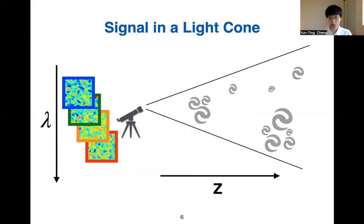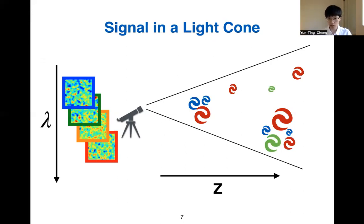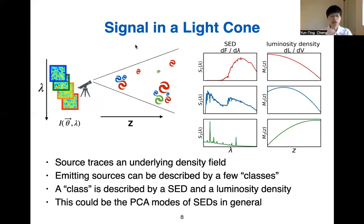Let's first think about how we can describe the signal we see in the data. Our observing data is an intensity map in multiple frequencies, and the signal is coming from all the sources within the light cone of our observation across all redshifts. We can describe these sources in terms of a few different classes — for example, red, blue, and green classes — where all these galaxies trace the same underlying density field, and within each class, all sources have the same SED. Their redshift distribution is described by some luminosity density as a function of redshift.